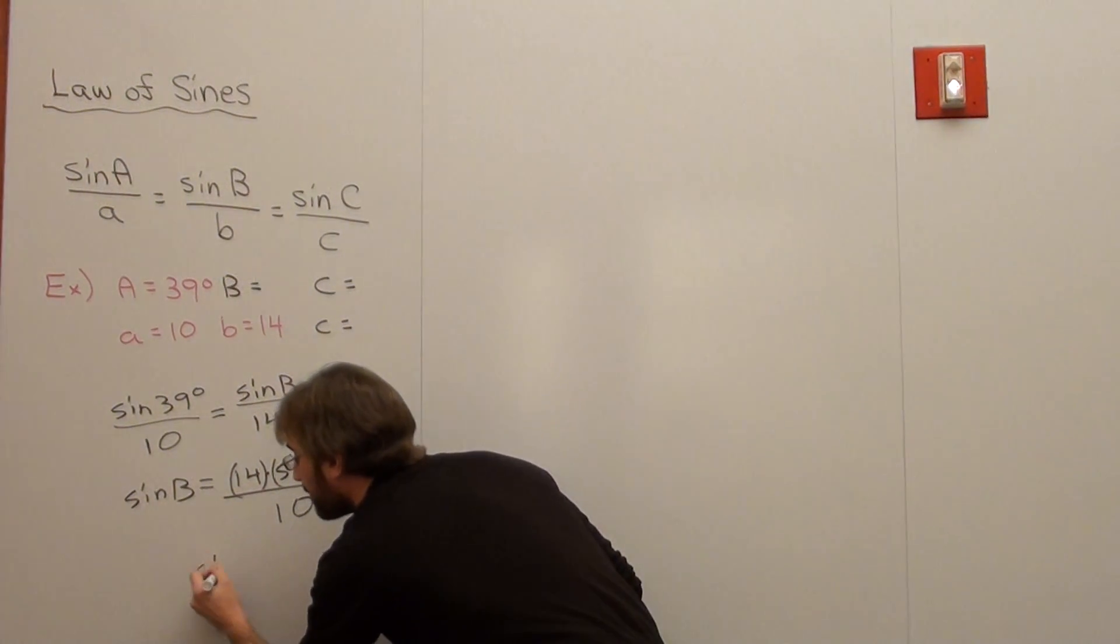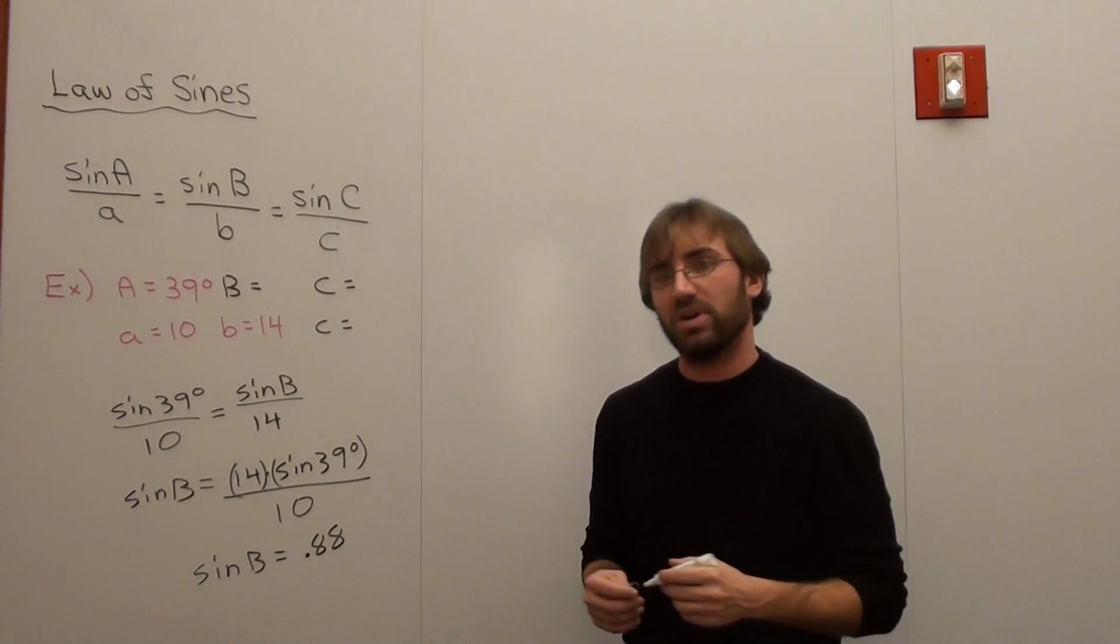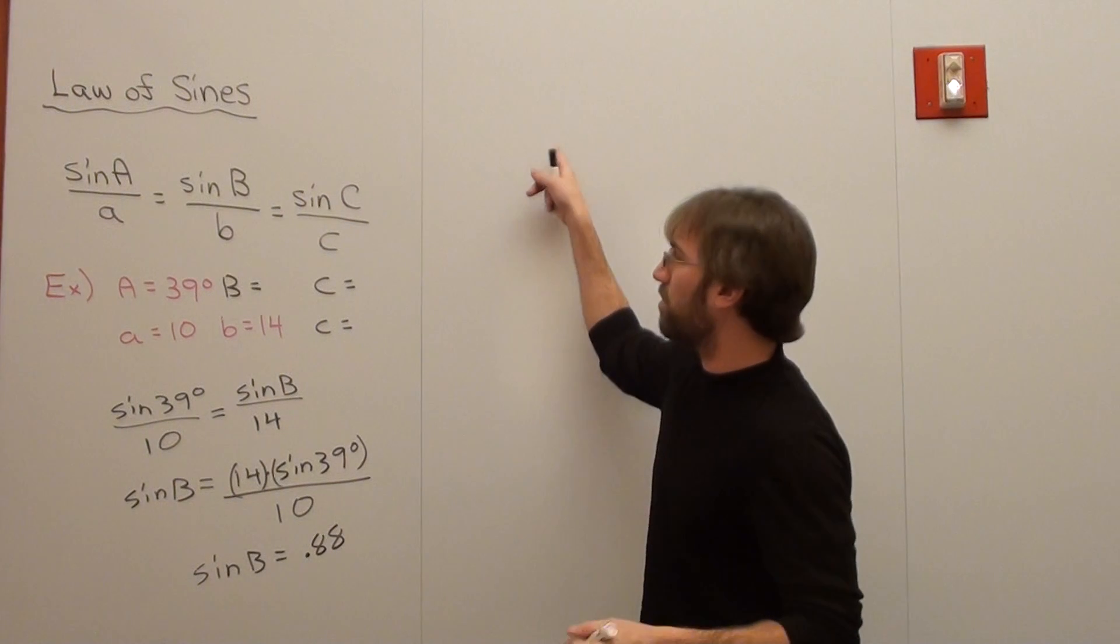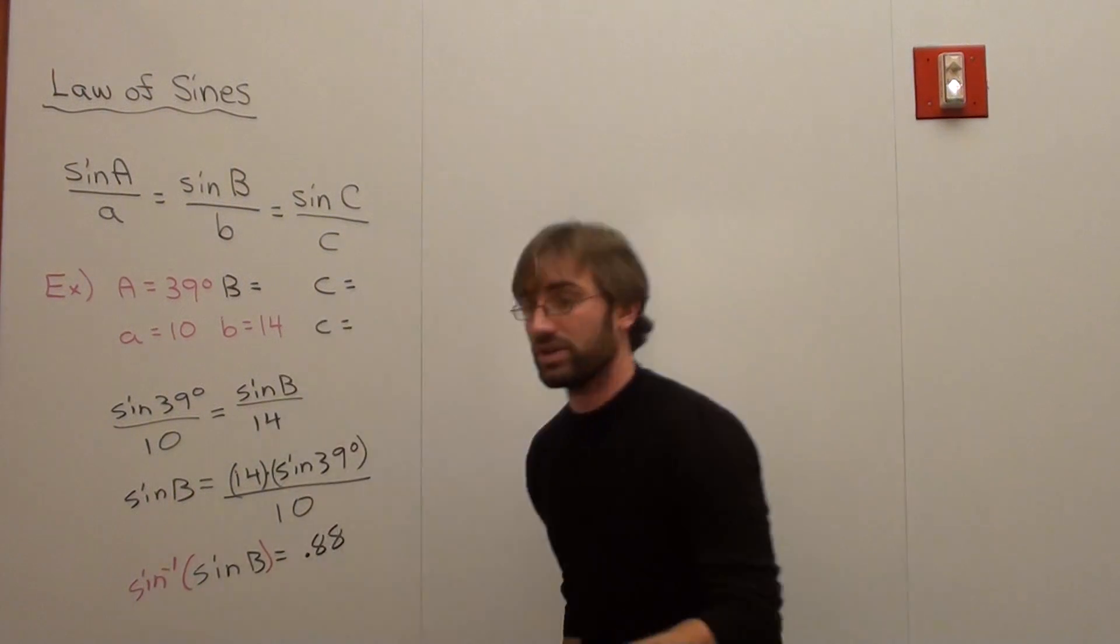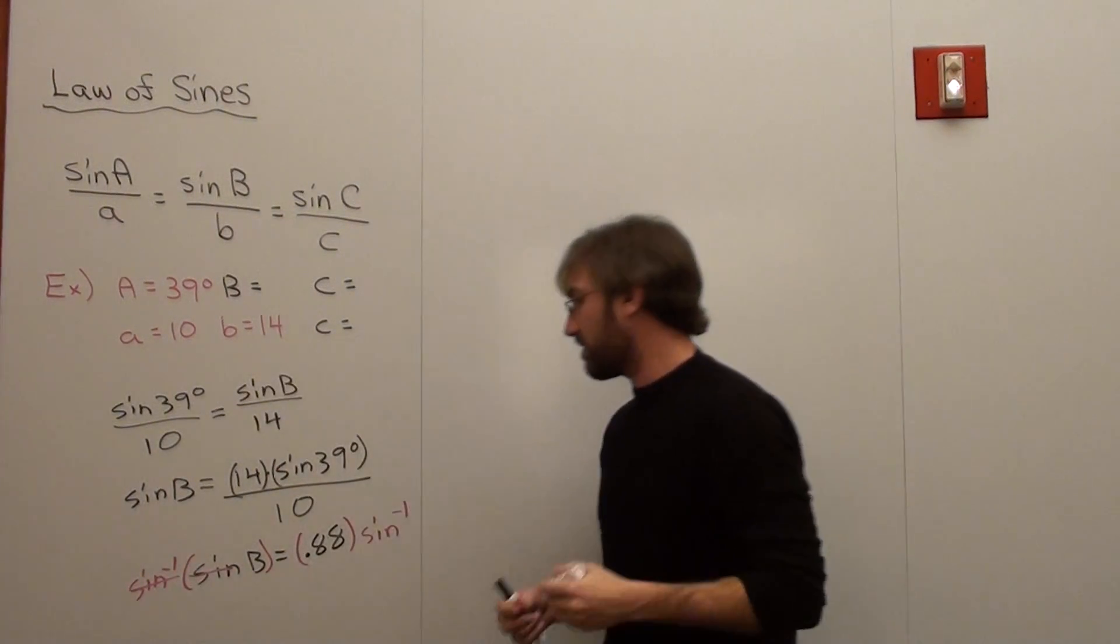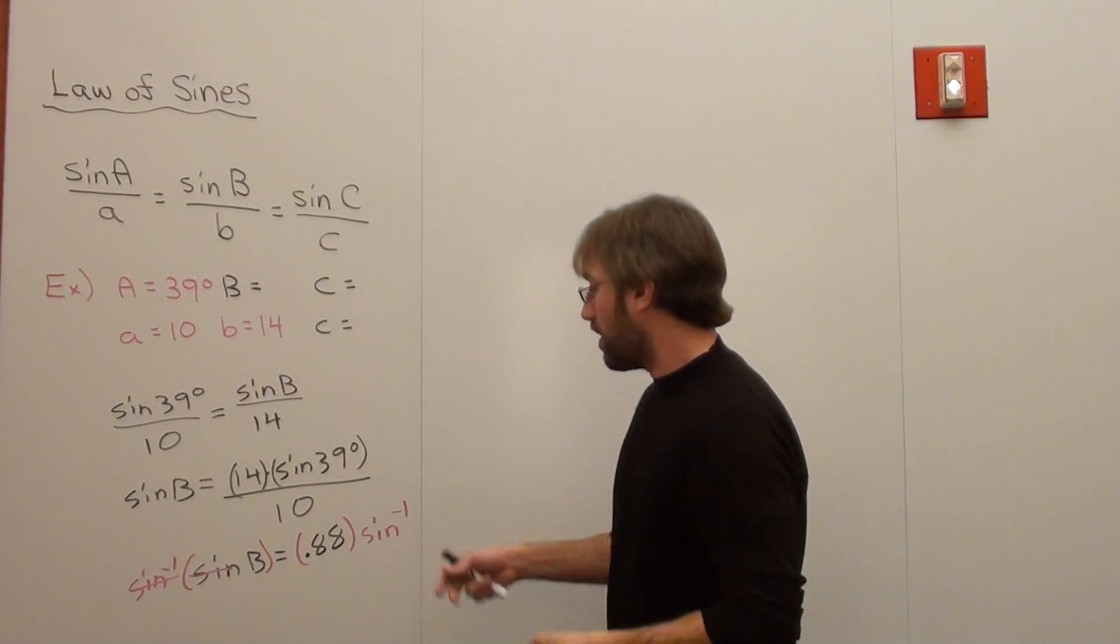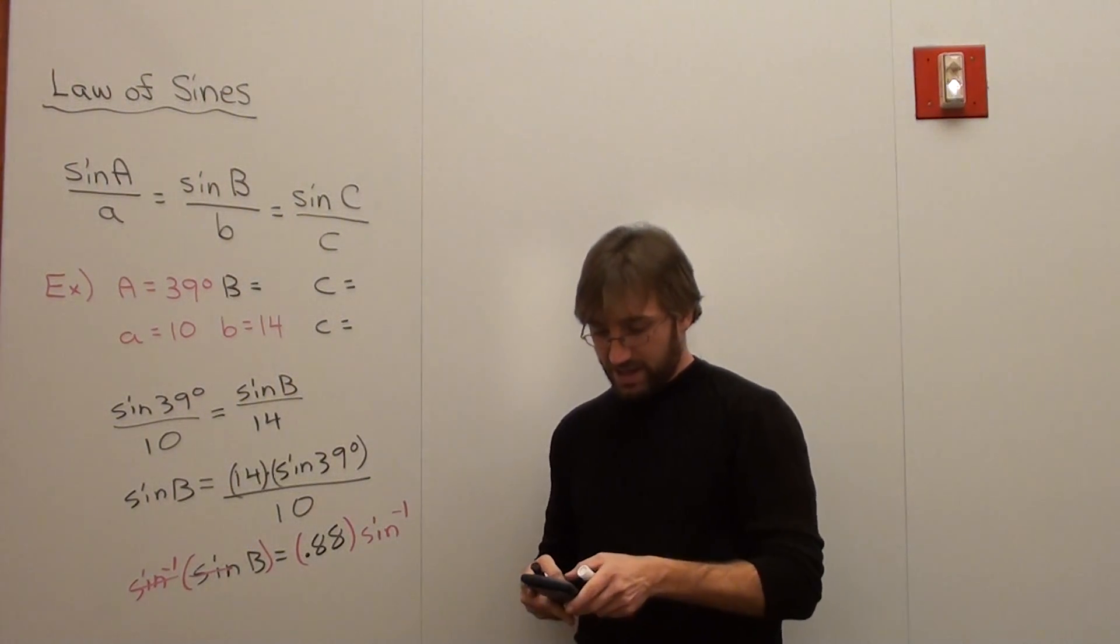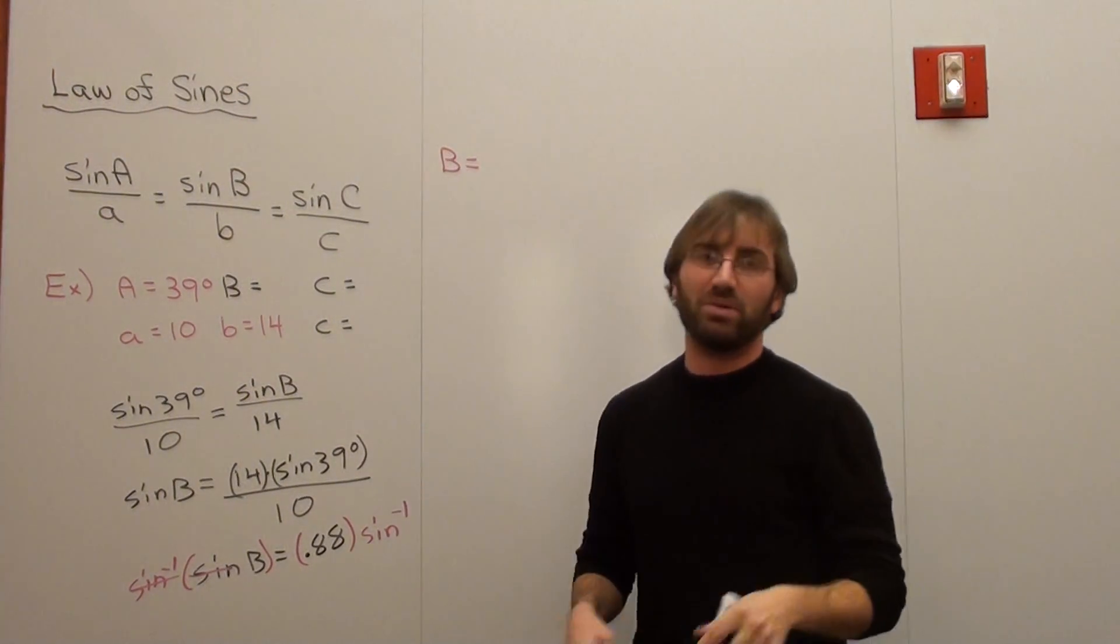So the sine of B is approximately 0.88. If I want to figure out B, what I do is I take the inverse of both sides. Remember, it's not the reciprocal, it's the inverse of this. Your answer for your degree is going to vary because I rounded this. So when I take the inverse sine of 0.88, I get 61.6, which in my opinion rounds to 62 degrees.